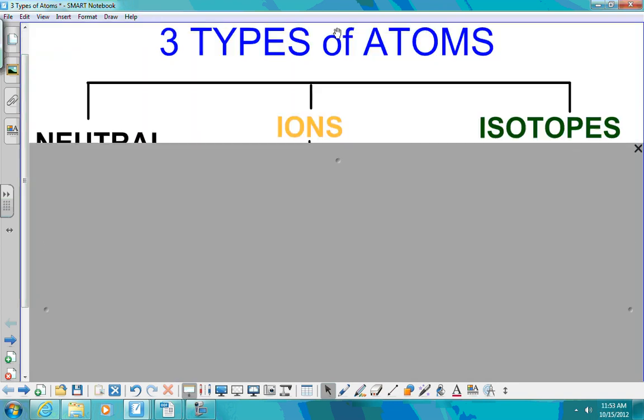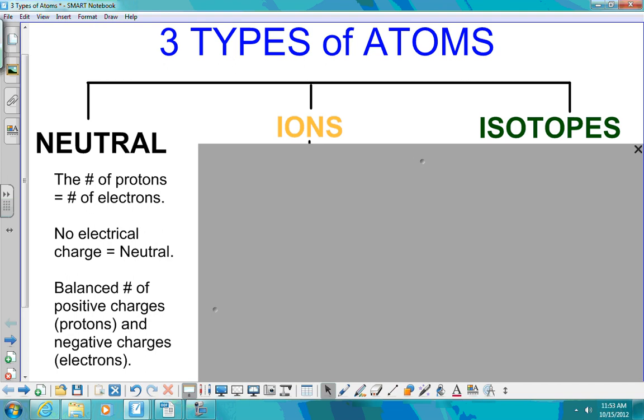And what I'm going to do is, just so we can focus on one part at a time, let's just talk about neutral. So neutral atoms, a lot of times you just hear your teacher say atom. If they're not saying ion or isotope, you can assume they're speaking about a neutral atom.